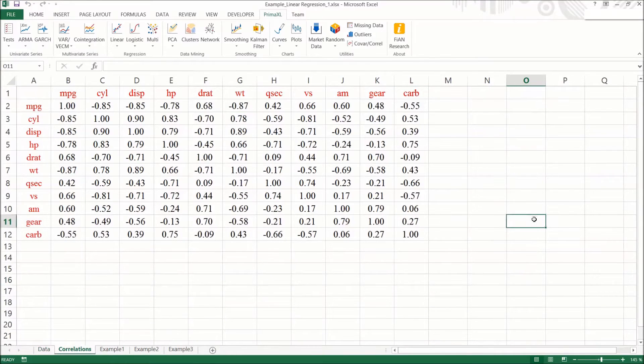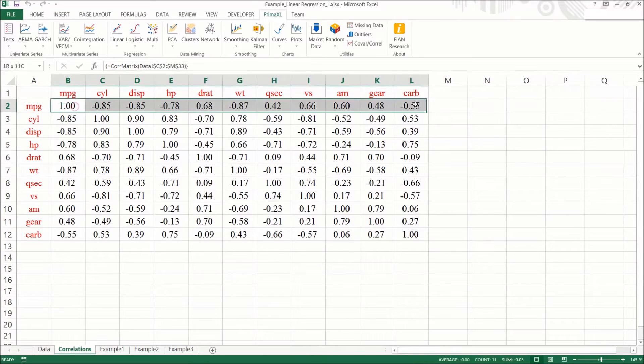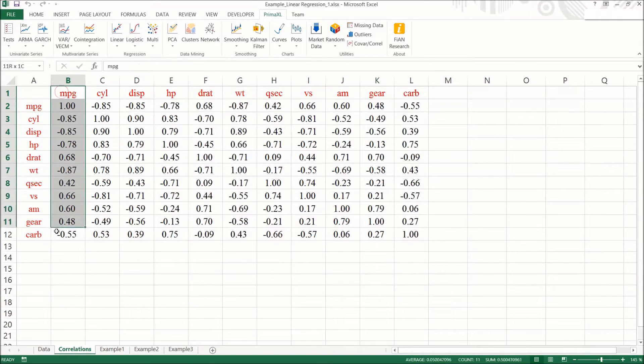Great! Here, I have manually copy-pasted the labels to guide the eyes. The first row or the first column shows the correlations with the variable MPG. There seems to be strong correlations between the MPG and some of these variables. Those variables are CYL, DISP, HP, and WT to name a few. These are good candidates as the explanatory variables.